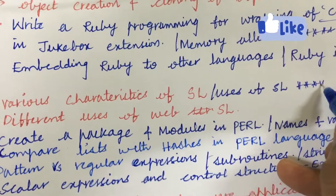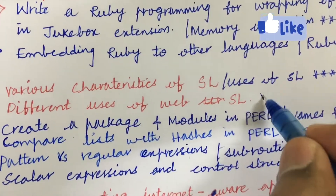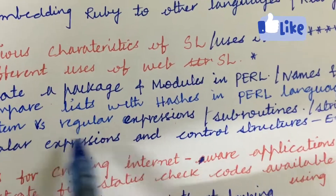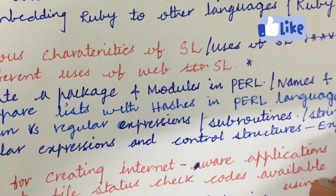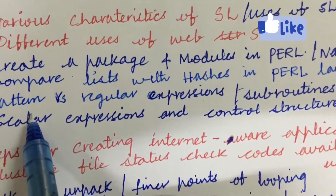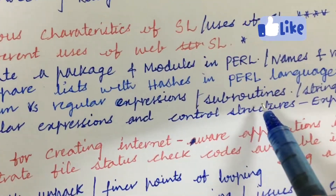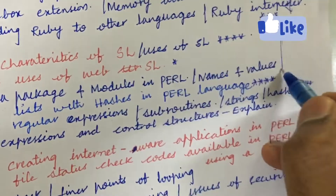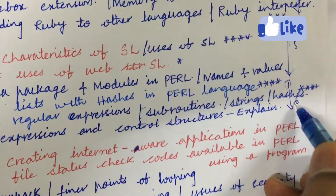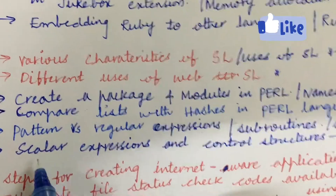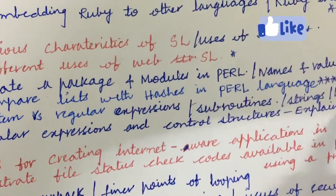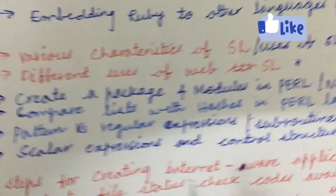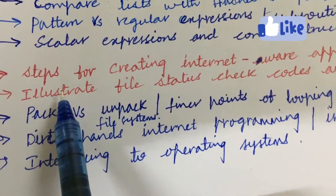The various characteristics of scripting language and the uses of scripting language are also gunshot questions, as are the different uses of web scripting language. Creating packages and modules in Perl, names and values, and comparing lists with hashes in Perl are also gunshot questions. The differences between pattern matching and regular expressions, as well as subroutines, strings, and hashes — from this concept you get one more question (question 5). From here, question 6a and 6b: scalar expressions and control structures — explain in detail, which may be a 7-mark question. From this concept you are going to get 30 marks for sure.